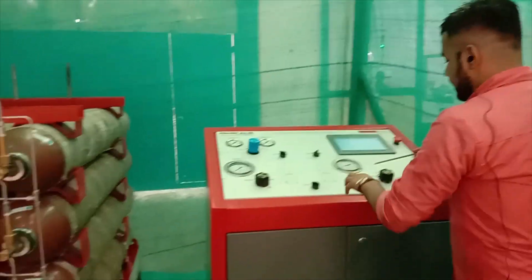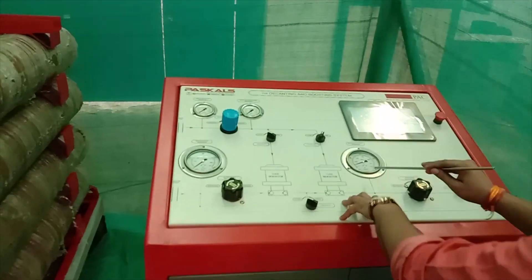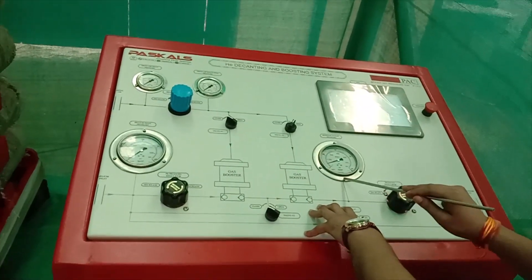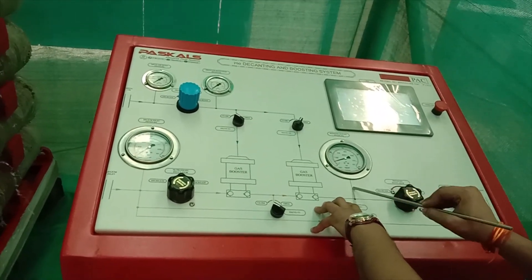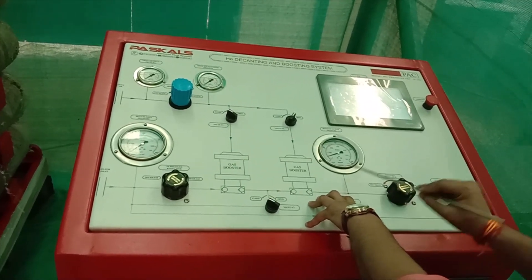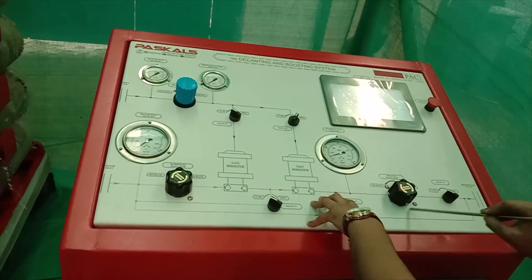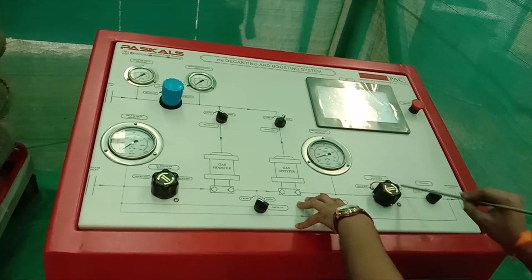So if you see the red line, we have a pressure gauge after the gas booster which shows booster pressure. And we also have a pressure regulator which can be regulated as per the customer's desire.